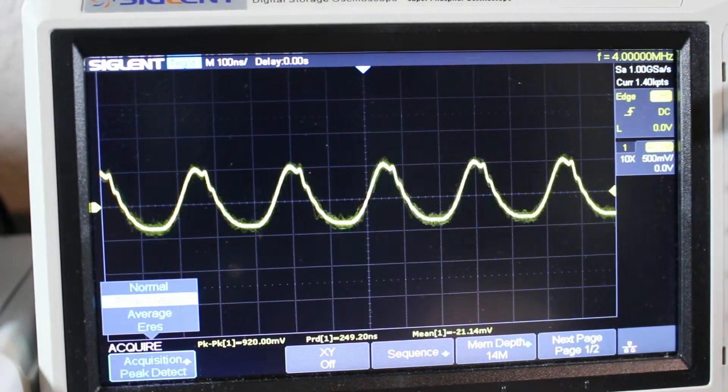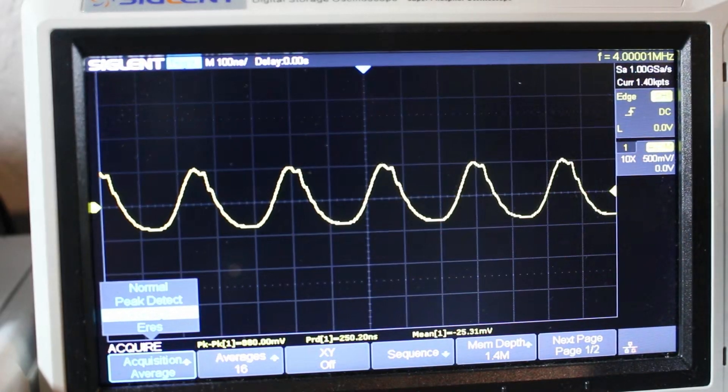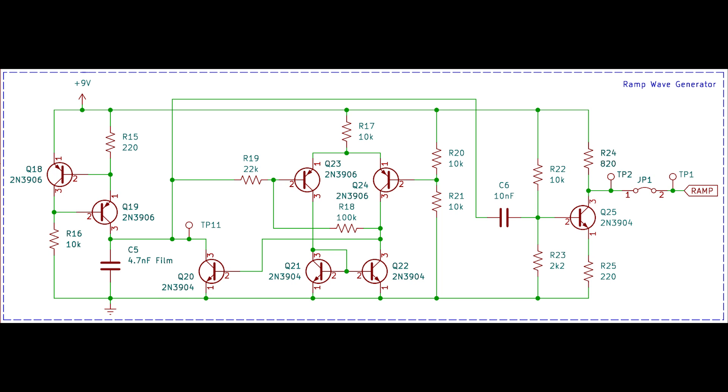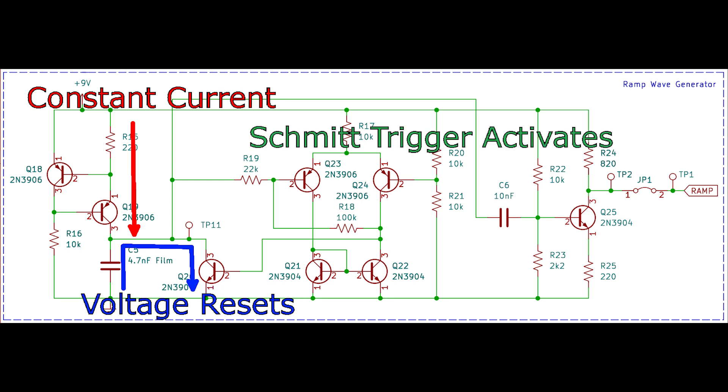Instead of trying to generate a sine wave directly, I took inspiration from one of my own previous projects. In my Class D amplifier video, I needed to include a ramp wave for use in the PWM generator. It worked by taking advantage of the linear relationship between the current flowing into a capacitor and the slope of the voltage. Here, a constant current source would charge the capacitor at a constant rate, giving us a nice ramp up. Then, a Schmitt trigger would quickly reset the capacitor's voltage once it reached a maximum value.